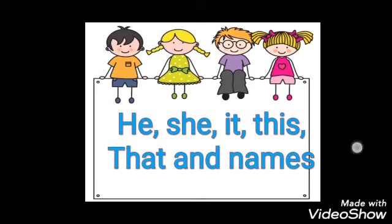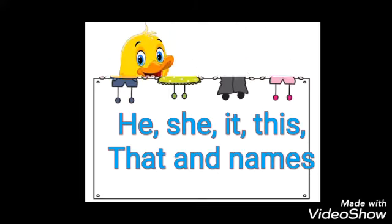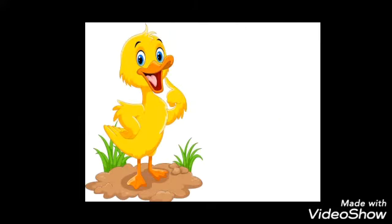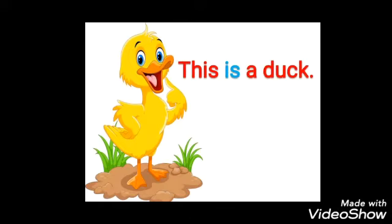To chaliye kuch examples dekhte hai. This is a duck. Ye hai ek batak hai. This is — ye hai, is matlab hai, a matlab ek, duck matlab batak. Ye hai ek batak hai. So, this ke saath kya aaya? Is.